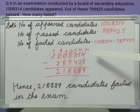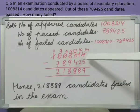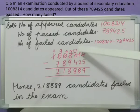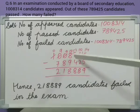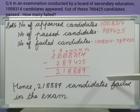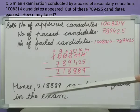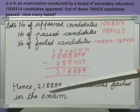Since 4 minus 5 is not possible, we need to borrow and follow the rule of borrowing: if we are subtracting the 1s place, we borrow from the 10s place; if we are subtracting the 10s place, we borrow from the 100s place. Therefore, we got the answer that is 2,18,889. Hence, 2,18,889 candidates failed in the exam.